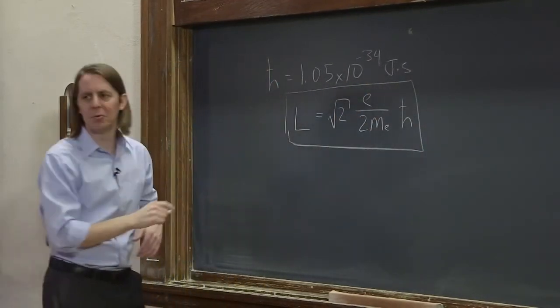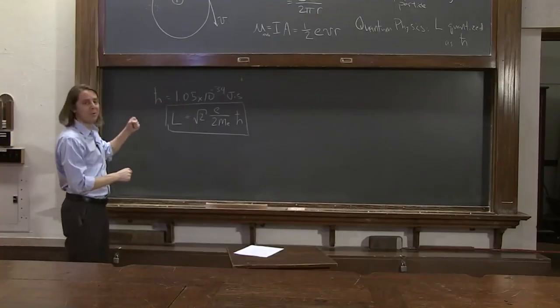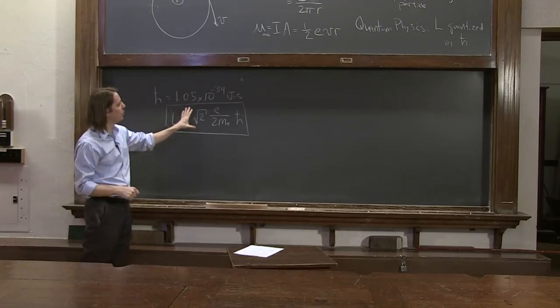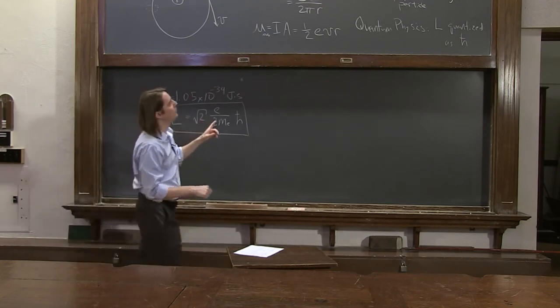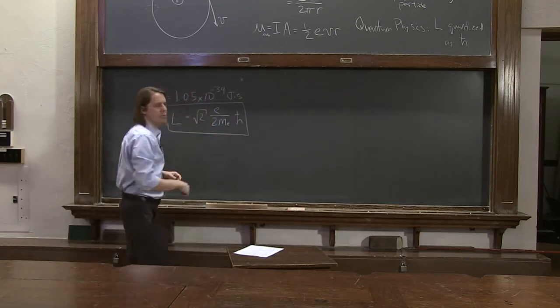Well, this is the lowest non-zero value. So if the electron has no angular momentum, then that's fine. But it would also be, this is the first quantized value above zero of the electron's angular momentum, where we've just basically replaced L with square root of 2, 2 h-bar.